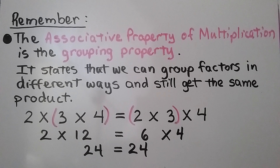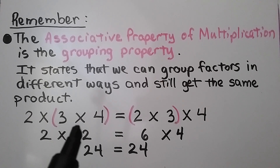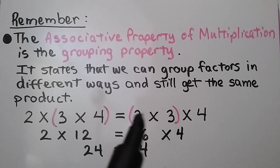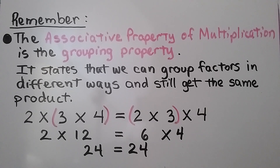The associative property of multiplication is the grouping property, and it states that we can group factors in different ways and still get the same product. We can have 2 times 3 times 4 in parentheses. We do the parentheses first, so that's 2 times 12, which equals 24. If we put the 2 and the 3 into parentheses and group them differently, we have 2 times 3 is 6, then 6 times 4, which is also 24. It doesn't matter how we group them — if it's all multiplication, we get the same product.